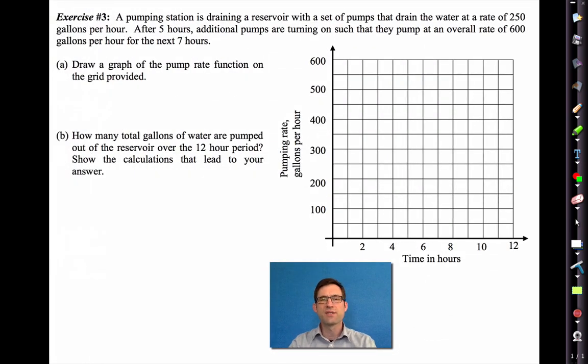Exercise 3, another practical problem. A pumping station is draining a reservoir with a set of pumps that drain the water at a rate of 250 gallons per hour. After five hours, additional pumps are turned on, or turning on, such that they pump at an overall rate of 600 gallons per hour for the next seven hours. Draw a graph of the pump rate function on the grid provided. So what do we know?